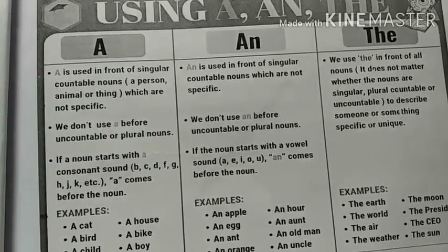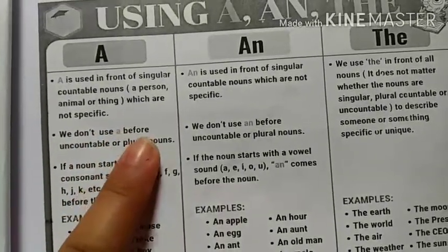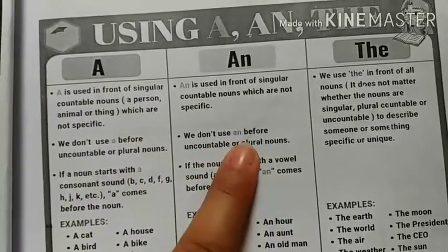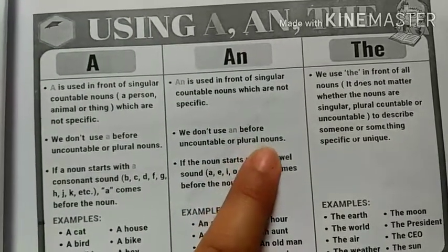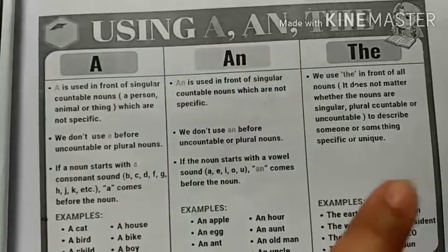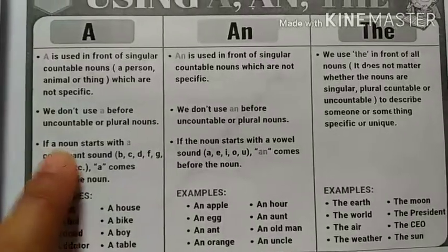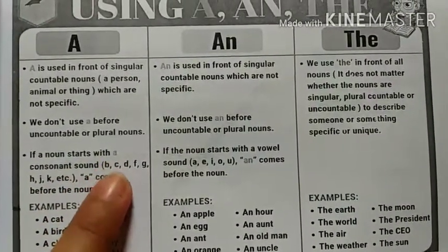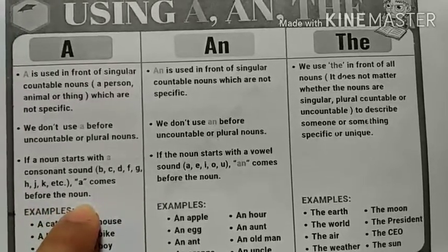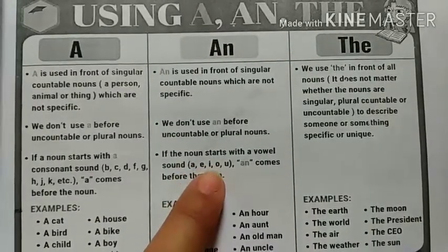We don't use 'a' or 'an' before uncountable or plural nouns, but we do use 'the' before uncountable or plural nouns which are specified or unique. If a noun starts with a consonant sound - B, C, D, F, G, H, J, K, etc. - 'a' comes before the noun. If the noun starts with a vowel sound - A, E, I, O, or U - 'an' comes before the noun.